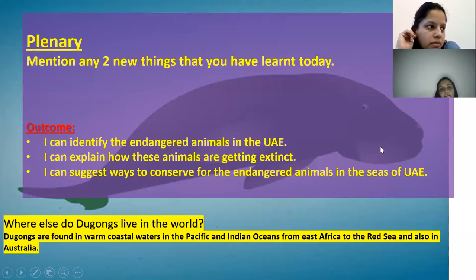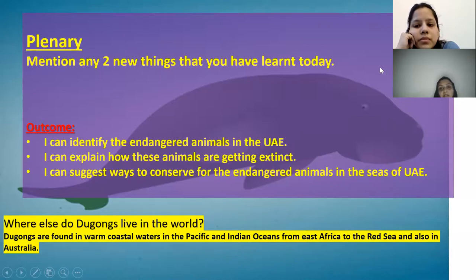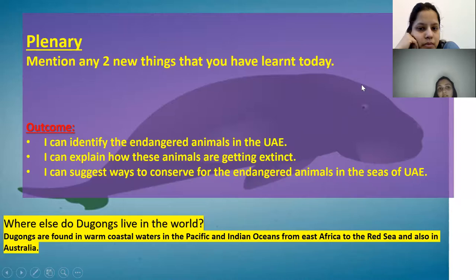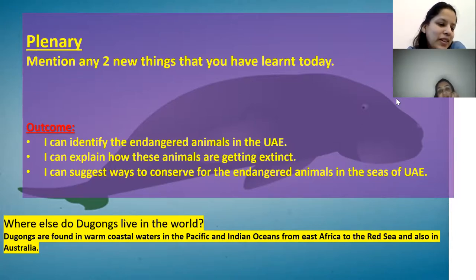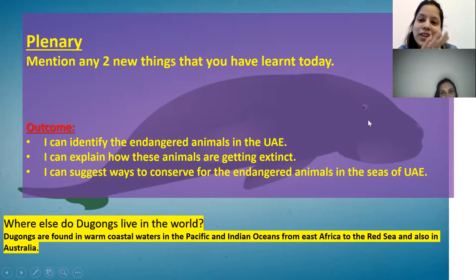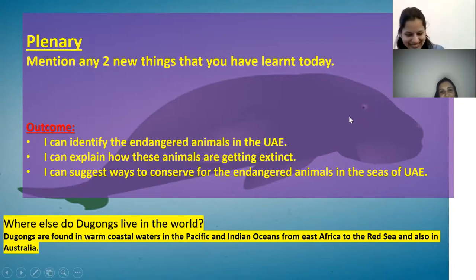In the plenary, Rabia shares what she learned: dugongs are an endangered species and the underwater ecosystem depends on them, so we need to protect them. The teacher briefly clarifies the subject is Social Studies (SST), as they are learning about UAE. Rizvana adds that after Australia, the majority of dugongs are found near Abu Dhabi's coastal region.